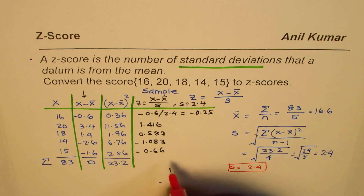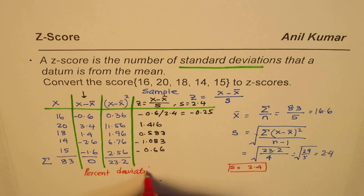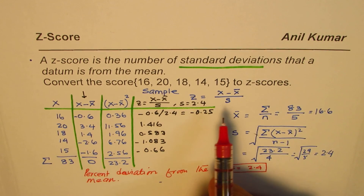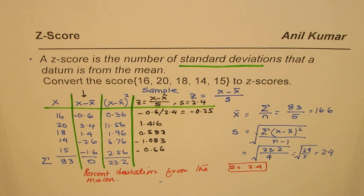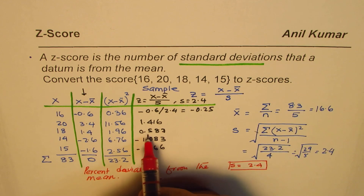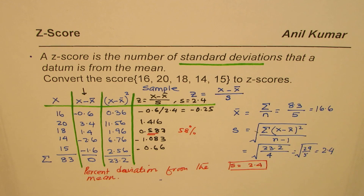So what we find here is the percent deviation from the mean. In our case, we calculated the sample mean and sample standard deviation, then found the z-values. If the z-score is negative, the datum is on the lower side; if positive, it is that percent higher. For example, a z-score of 0.583 means the score is about 58% of a standard deviation higher than the mean. I'm Anil Kumar — I hope this video helps you understand the concept. Thank you, and all the best.